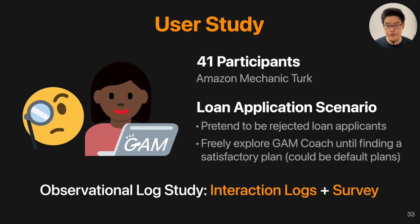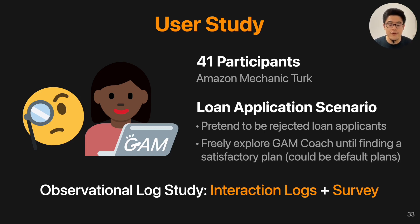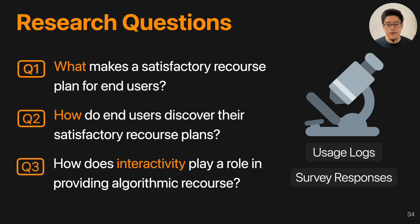After developing GankCoach, we wanted to use it as a research instrument to learn how everyday users would use an interactive recourse tool. We conducted a user study with 31 participants recruited from Amazon Mechanical Turk. Similar to the demo, participants were asked to pretend to be rejected loan applicants and freely explore GankCoach until finding a satisfactory plan. They could change the default plan, but were not forced to use any particular configurations. During the study we logged all interactions — which buttons they clicked and timestamps — and administered a survey at the end.